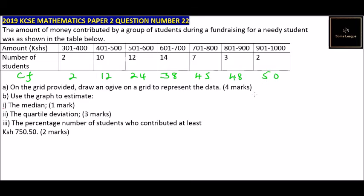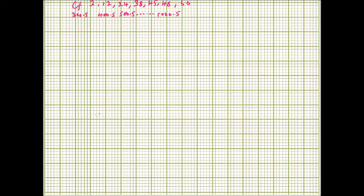We use this table to draw the cumulative frequency ogive. For the upper class boundary of the class 301 to 400, we assume the upper class boundary of the previous class would have been 300.5, so that will be our starting point. Then we go to 400.5, 500.5, and so on. The vertical scale is cumulative frequency.